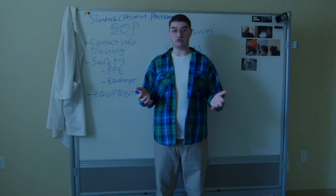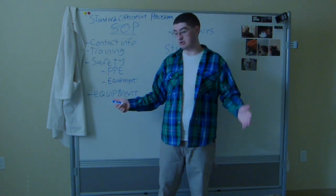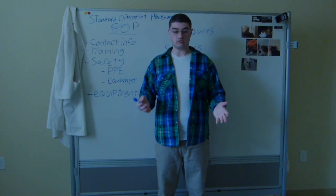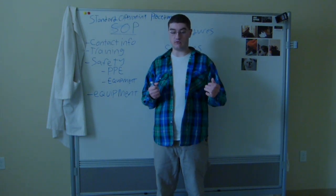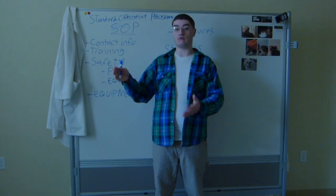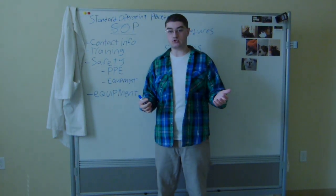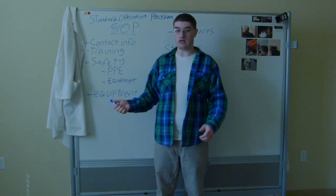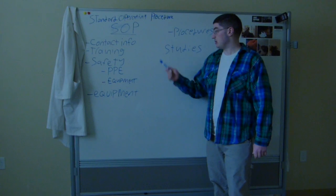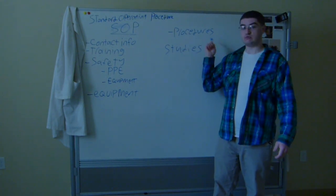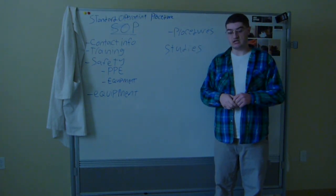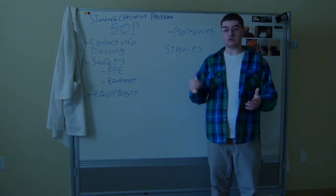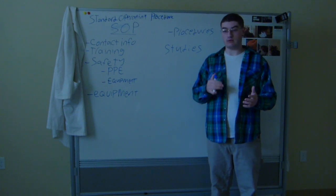A standard operating procedure is also a good place to keep track of all the other equipment in the lab. This could be an equipment inventory, and it could include checklists for who the contact person is for each piece of equipment, how often it should be cleaned or maintained, and how often it needs to be calibrated. Of course, you would also want to include various procedures — if there is a procedure your lab does all the time, it's a good idea to write it down and put it in the SOP.